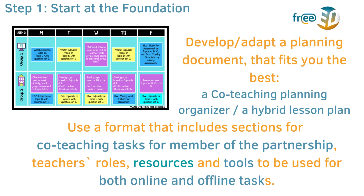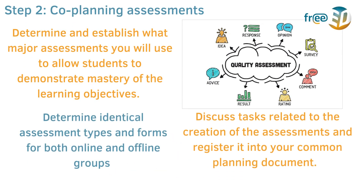The second step in this co-planning process is the co-planning of assessments. Determine what major assessment you will use to allow students to demonstrate mastery of the learning objectives. Also, it is important to determine identical assessment types and forms for both online and offline groups. These should include both major summative assessments — tests, projects, portfolios — as well as smaller formative ones like homework or discussion forums. You do not need to accurately create them at that moment; you can simply plan out what they will be and what students will be asked to do. Also, discuss with your co-teaching partner tasks related to co-creation of the assessments and register it in your commonly agreed planning document.